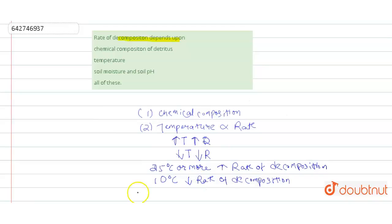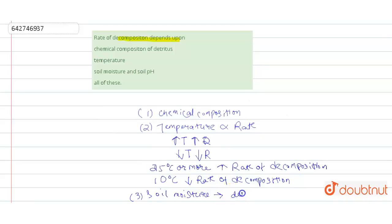The third factor is soil moisture. Excess moisture in the soil delays or stops the decomposition process.